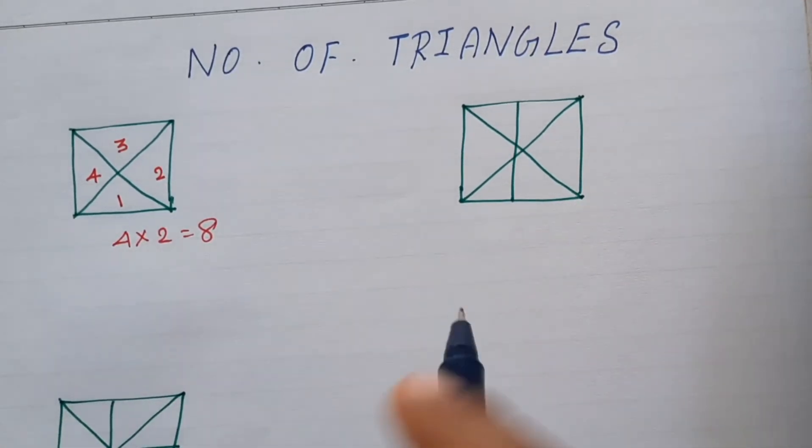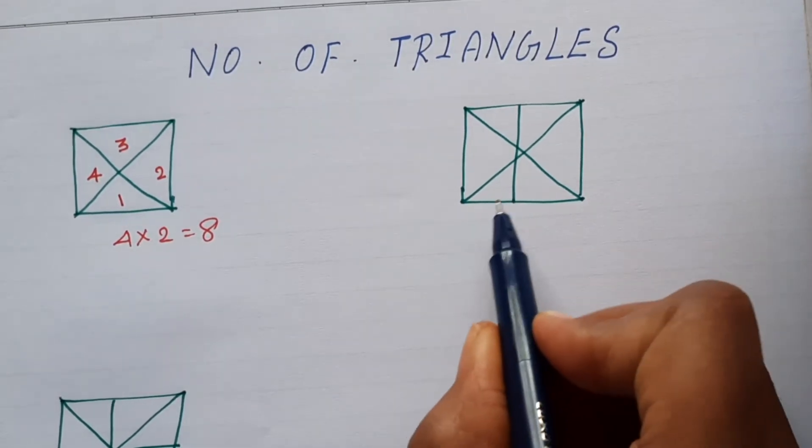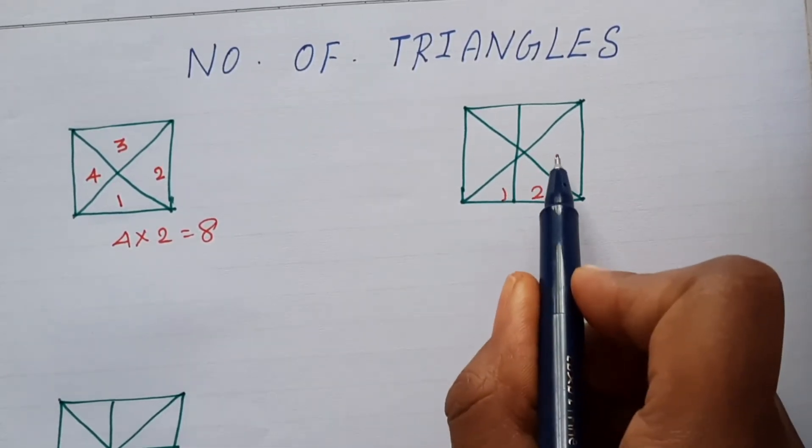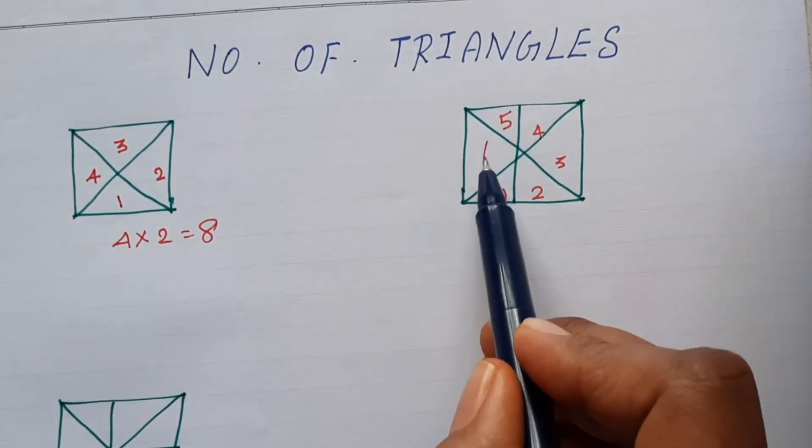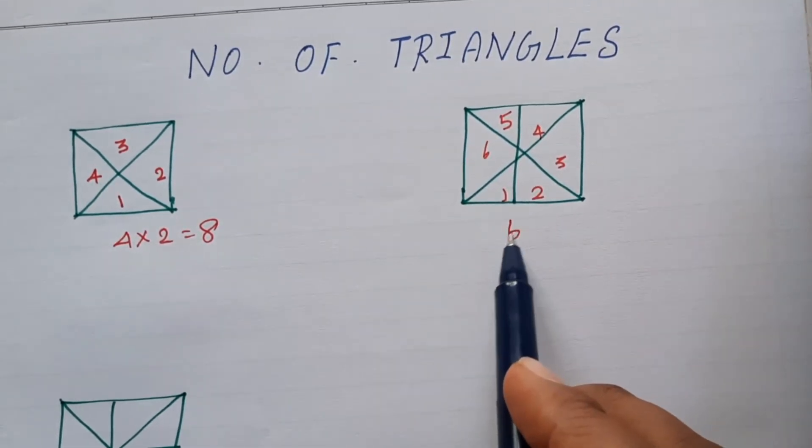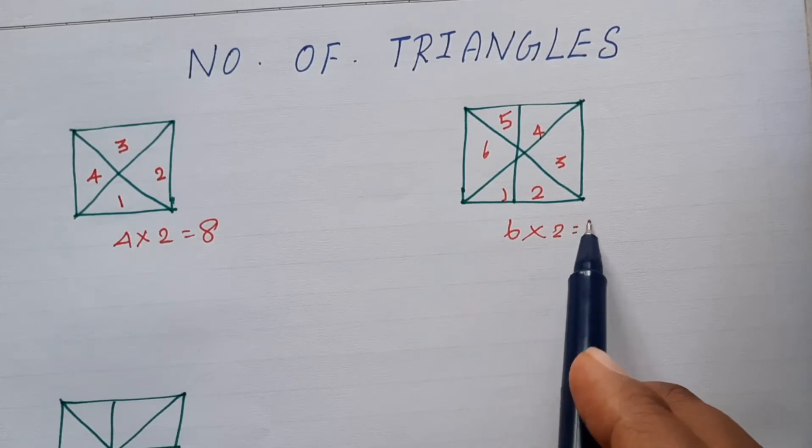Now, we will see the next figure. Let's do the number of triangles. 1, 2, 3, 4, 5, 6. Now, there is 6. 6 into 2 is 12 triangles.